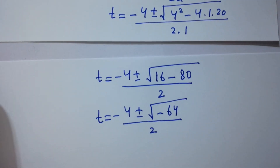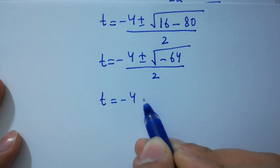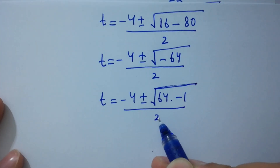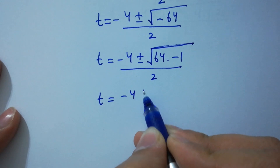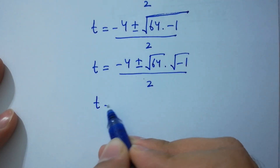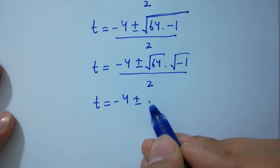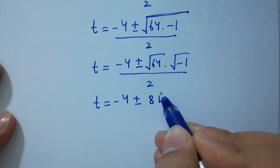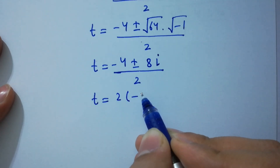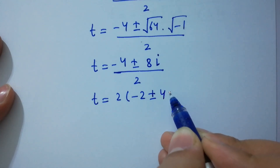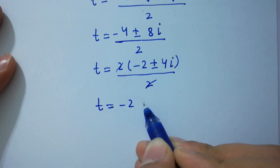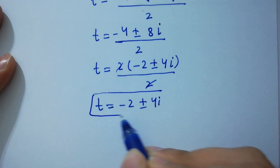We rewrite: square root of minus 64 equals square root of 64 times minus 1, which equals square root of 64 times square root of minus 1. Since square root of 64 is 8 and square root of minus 1 is i from complex numbers, we get t equals minus 4 plus or minus 8i over 2. Taking 2 as common factor, t equals minus 2 plus or minus 4i, which are our two complex solutions.